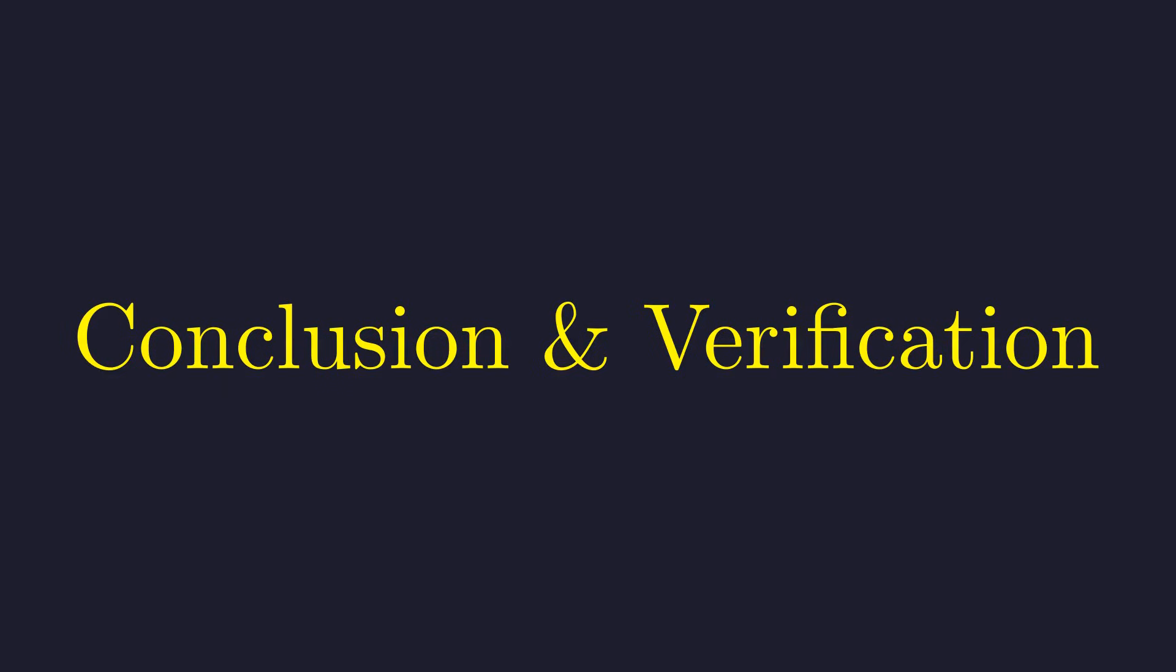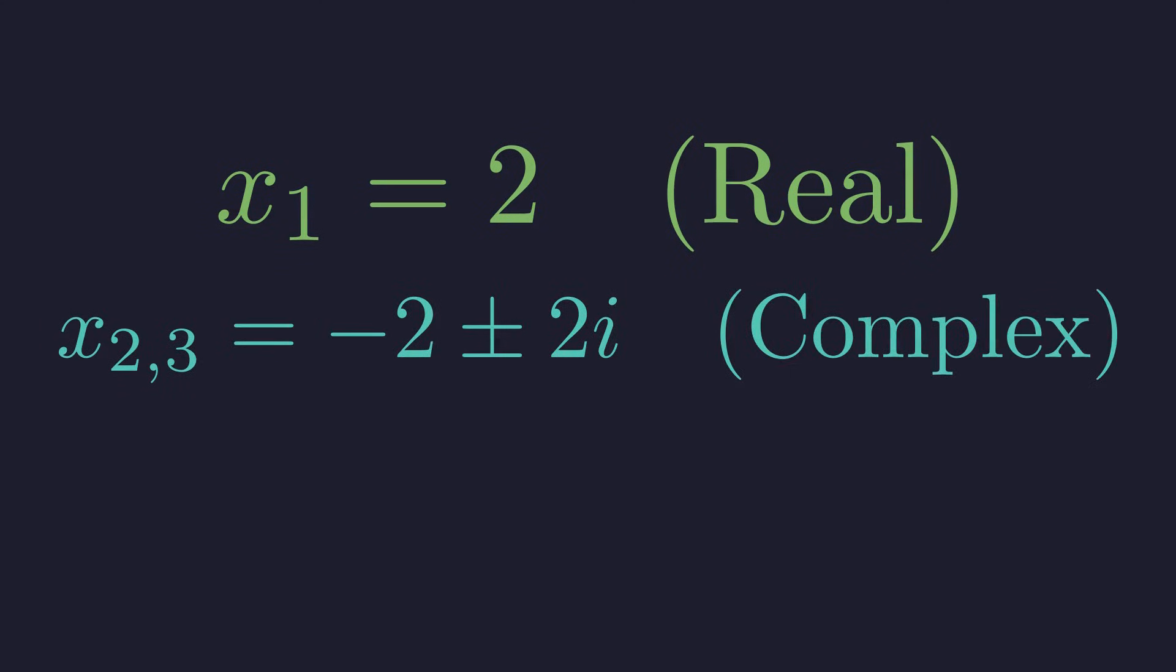Let's take a moment to summarize all three solutions and then verify the real one visually. x equals 2. And second, the pair of complex solutions. x equals negative 2 plus or minus 2i.